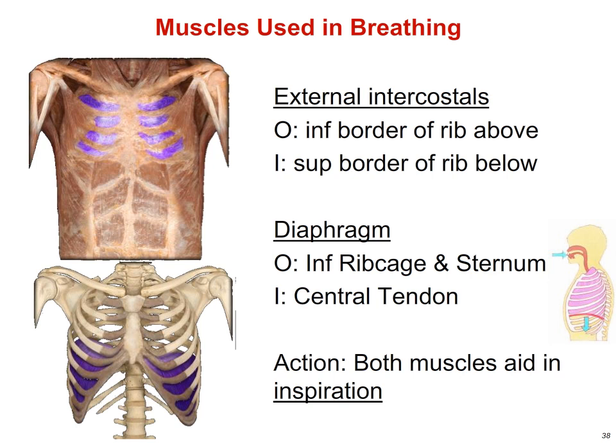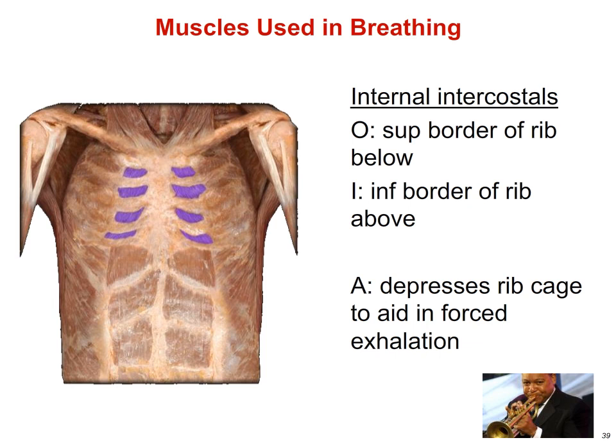There's another intercostal called the internal intercostal, interior to the external intercostals. You don't need to identify origins and insertions beyond knowing they connect from rib to rib. The function of the internal intercostals is to help depress the ribcage and aid in forced exhalation. Normally exhalation can happen passively as the diaphragm relaxes, but during exertion or when playing musical instruments like trumpet or trombone, forced exhalation requires contraction of the internal intercostals.